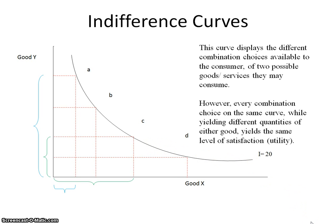I say again, every combination choice, whether you take this amount of good Y, or this amount of good X, or maybe a smaller amount of good Y and a larger amount of good X, both combination choices actually yield the same level of utility.